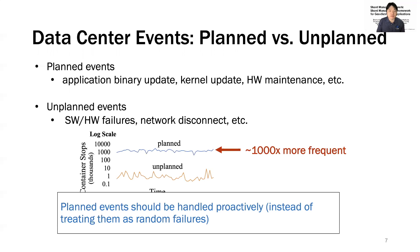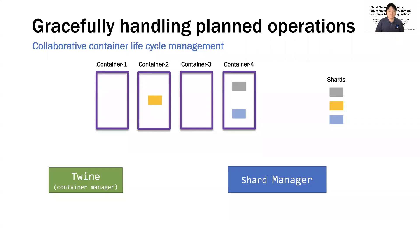As a result, planned operations should be handled proactively. Therefore, Shard Manager handles planned operations gracefully. In particular, we coordinate with the underlying container manager Twine to safely manage container lifecycle events. Twine does not have visibility into the state of the application, but provides a task control API to collaborate with the application for safely performing container operations. Shard Manager integrates with the task control API to achieve high shard availability on behalf of all sharded applications running on it.